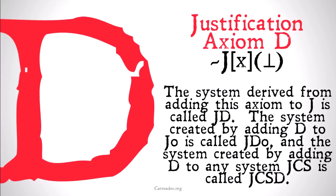The system derived from adding this axiom to J is going to be called JD. The system created by adding D to J0 is called JD0. And the system created by adding D to any system JCS, where C is a constant specification, is going to be called JCSD.